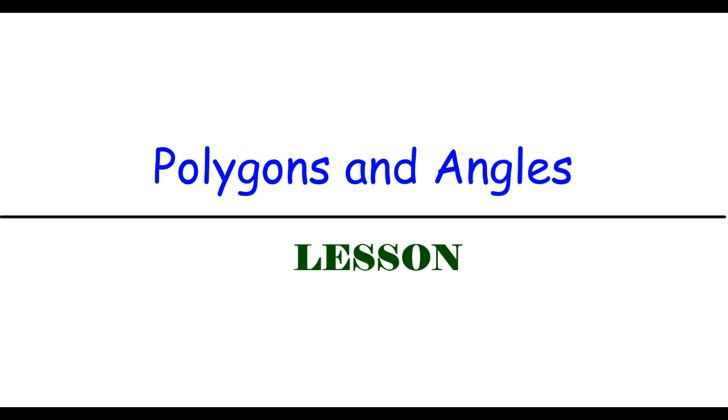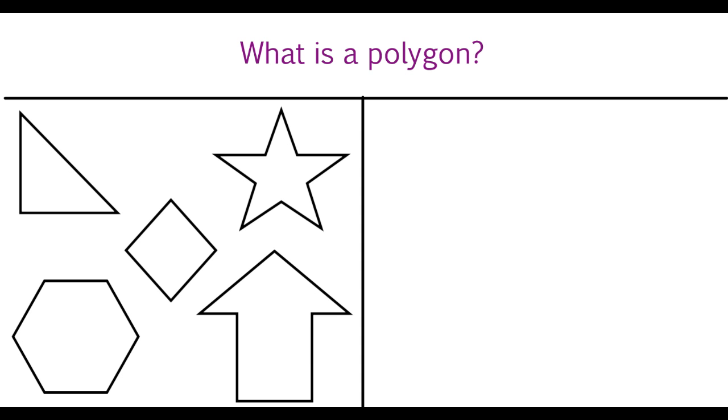Before we can talk about classifying polygons, first we have to talk about what polygons are. Some examples of polygons are these things that you see over on the left: the triangle, the square, the star, the arrow, and the hexagon. All of these qualify as polygons, and all of these things that you see on the right are not polygons.